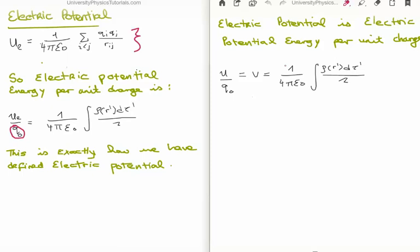That means if we look at the units of the potential, it's joules per coulomb — electric potential energy per unit charge. Thanks for watching, please share it with your friends, subscribe to my channel, and leave me a comment in the comment box below.